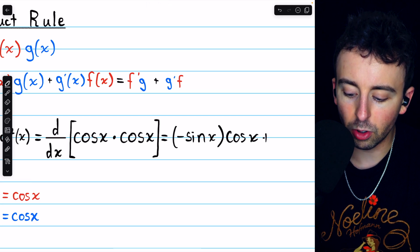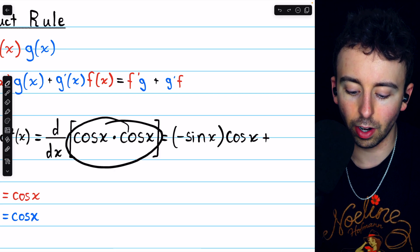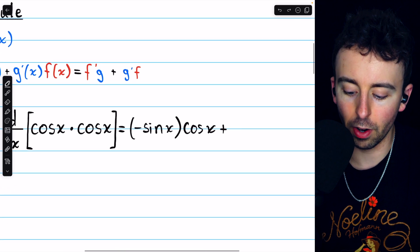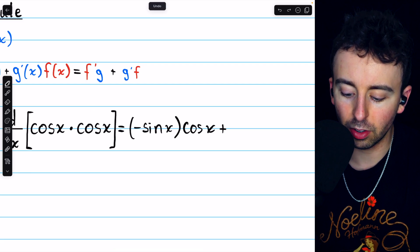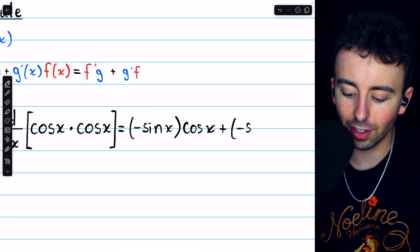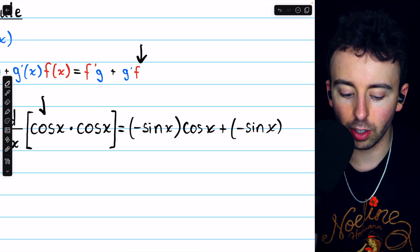Now the second term, g prime f, is going to be exactly the same thing since the two functions are the same. We have the derivative of the second function, the derivative of cosine which is negative sine, multiplied by f, the first function, which is cosine.